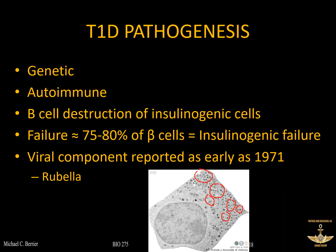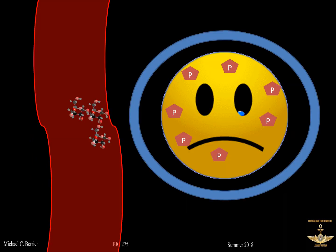As far as the viral component goes, that was reported as early as 1971 when they thought it was rubella — and there's still some evidence for that — but now Coxsackie B seems to be the primary viral trigger, if that indeed exists.